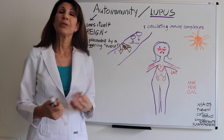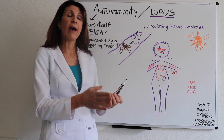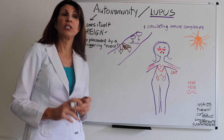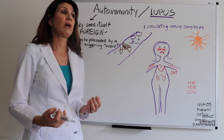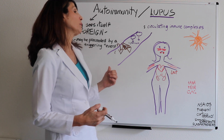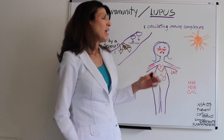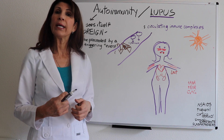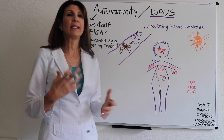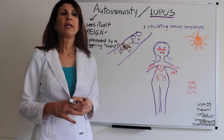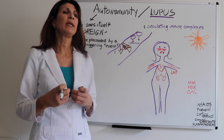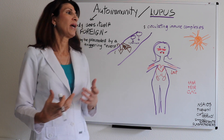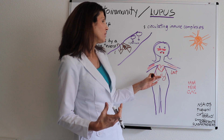Every patient is going to present a little bit differently — you're not going to have one cookie-cutter prototype of lupus. It just depends on how their system reacts to these immune complexes. The heart is going to be another target organ because the heart doesn't bypass anything that is in the system. You could have anything from cardiomyopathy to inflammation of the sac, endocarditis, and all kinds of cardiac difficulties.